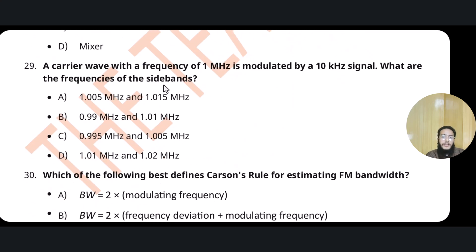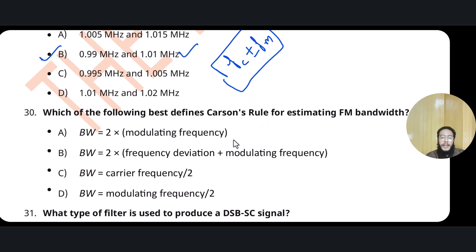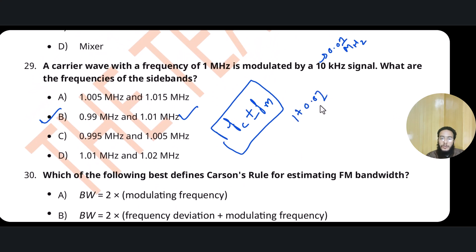A carrier wave with frequency of 1 MHz is modulated by a 10 kHz signal. What are the frequencies of the sidebands? Using fc ± fm: convert 10 kHz to 0.01 MHz. Upper sideband = 1 + 0.01 = 1.01 MHz; lower sideband = 1 − 0.01 = 0.99 MHz. Option B is the correct answer.